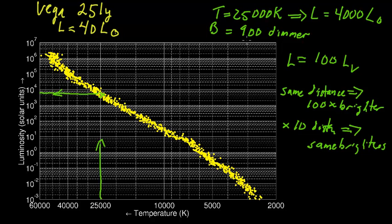So you go from 100 times brighter, and you move it back, you get the same brightness, you move it back. Another 30 times, another 30 times gets you 30 squared times dimmer, or 900 times dimmer. So we have 10 times 30, so this star is 300 times farther away times the distance to Vega.